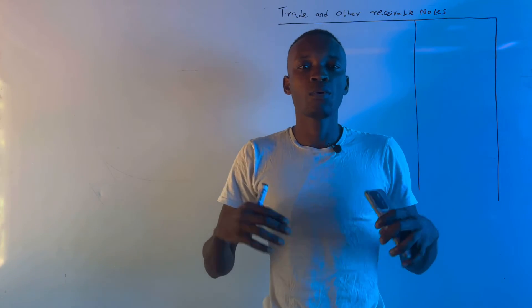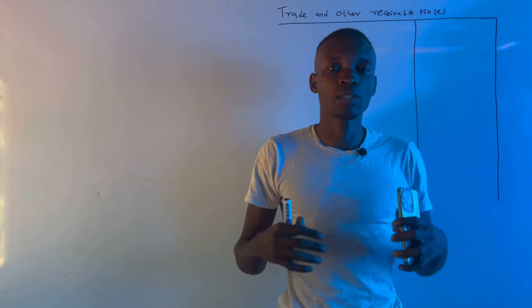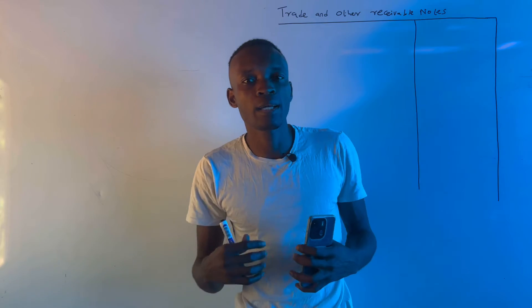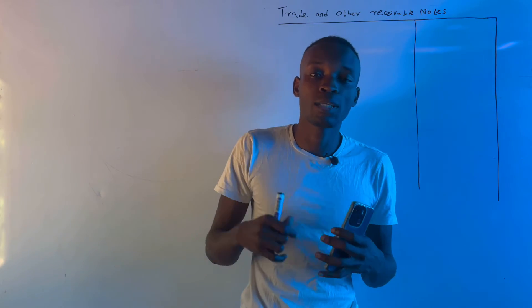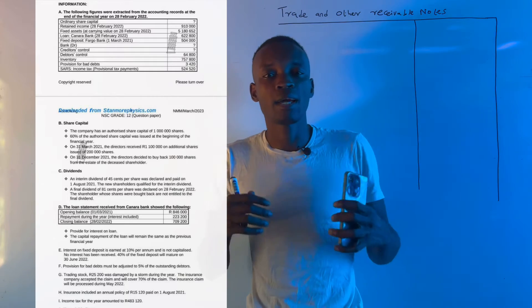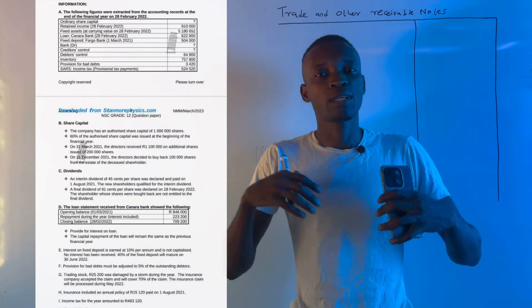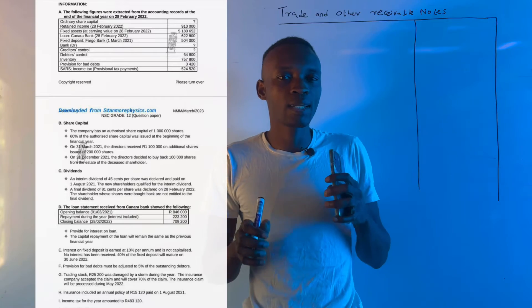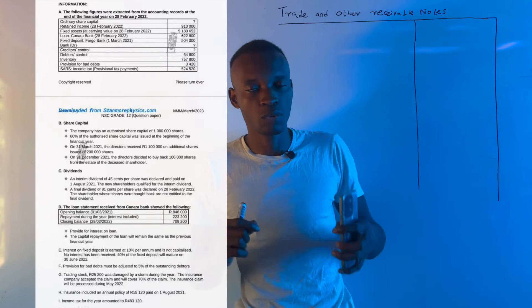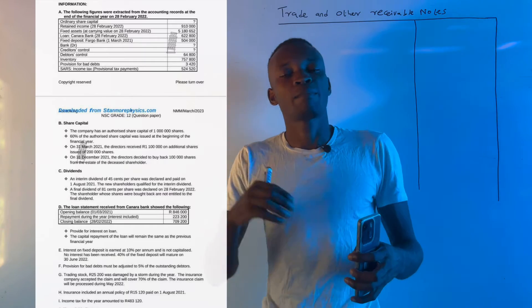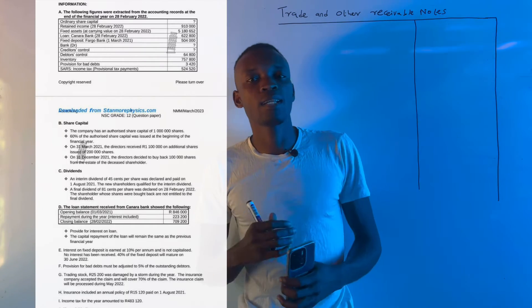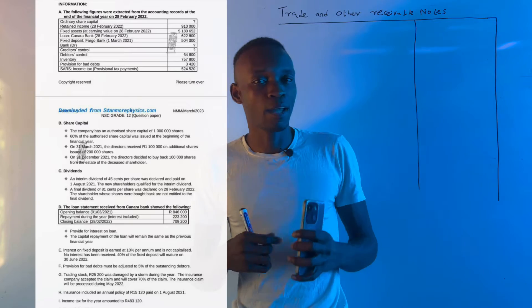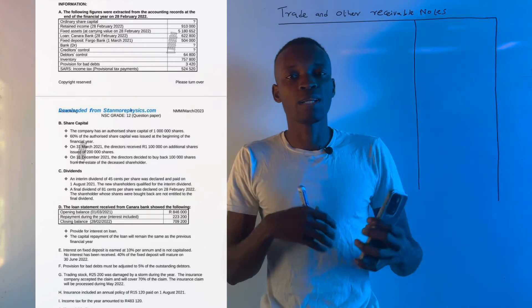In this video we are going to do one of the balance sheet notes known as trade and other receivables, also called trade and other debtors. We are going to deal with the notes found under current assets when you draw your balance sheet. Please stay tuned and watch until the end so you understand all the types of transactions we are going to cover.